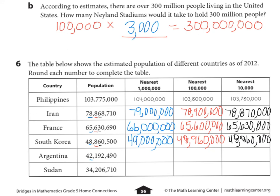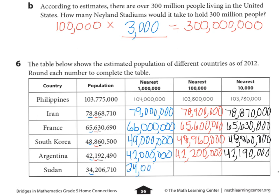Second to last: rounding to the nearest million place — I look to the right, I see a one — stays the same — forty-two million. Rounding to the nearest hundred thousand: I look to the right, I see a nine — so that becomes a two — forty-two million, two hundred thousand. Rounding to the nearest ten thousand: I see a nine; look to the right, I see a two — stays the same — forty-two million, one hundred ninety thousand. Last one: rounding to the millions — I see a two, stays the same — thirty-four million. Nearest hundred thousand: I look to the right, see a zero — thirty-four million, two hundred thousand. Ten thousands: I look to the right, see a six — increases by one — thirty-four million, two hundred ten thousand. And that's all for tonight's homework.